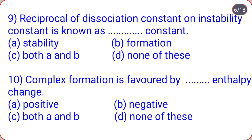The reciprocal of dissociation constant or instability constant is known as — options: stability constant, formation constant, both A and B, none of these. Correct option C: it is known as both stability constant and formation constant.